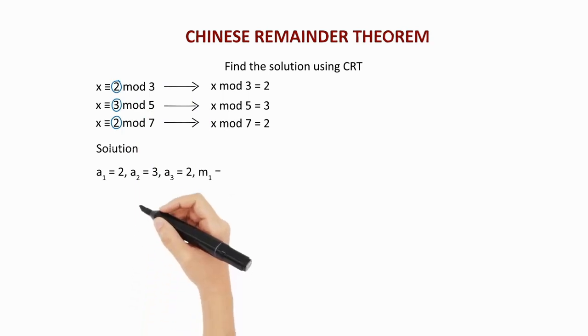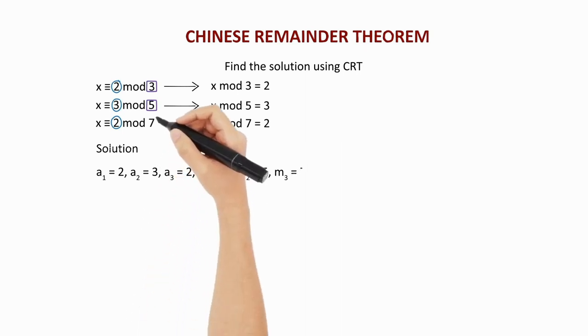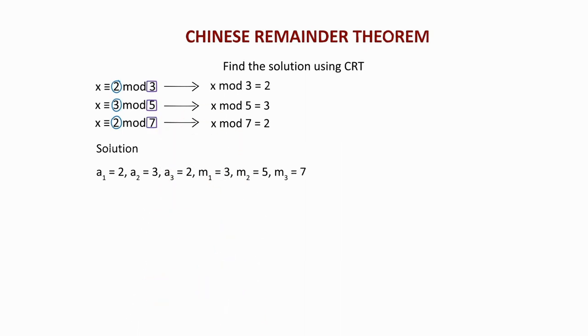Now, what is m1? m1 equals 3. Now, m2 is 5 and m3 is 7.